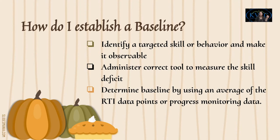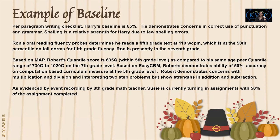So how do you do that? First, choose the targeted skill. Second, choose the correct tool to measure that skill. Chastity has talked about different probes for reading; there are different probes for math. EZCBM has them; Forefront Education has some; or you can develop your own probes to give a couple of times. Then take an average of at least three to four, and at that point look at where you want the student to get to. If they're working at 50%, can they get to 80% by the end of the year?